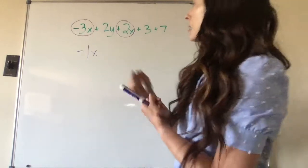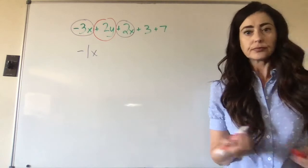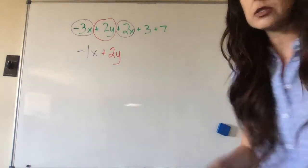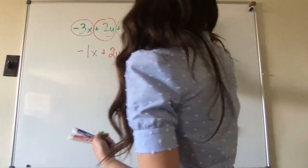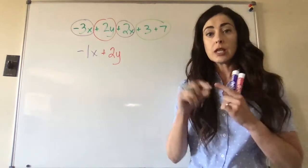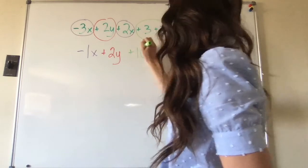And then the next term we have is a y. So are there any other y's in here? No. So we can just bring that down into our answer. And then we have whole numbers. So we'll circle our whole numbers. We have plus 3 and plus 7, or positive 3 and positive 7. Those signs are the same, so we just get to add them. 3 plus 7 is 10.